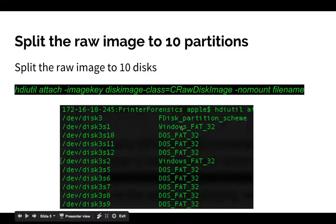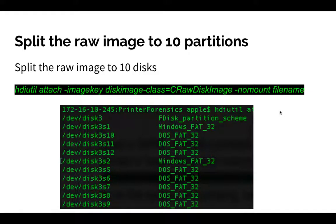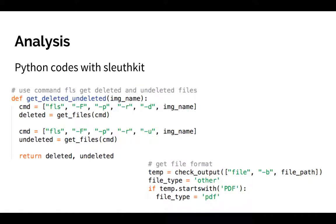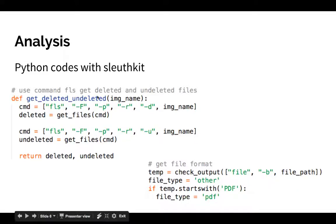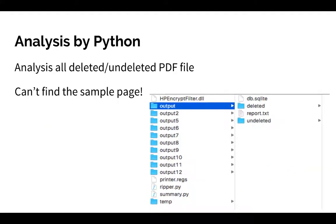It shows that there are 10 partitions. Disk 3s1 is actually the C partition, disk 3s2 is the D partition, and the others are storage used to save data. I wrote a Python script to analyze all 10 disks using Sleuth Kit — it saves all deleted and undeleted files into two separate folders and outputs a report showing all PDF files.